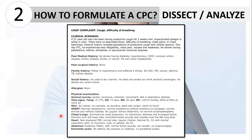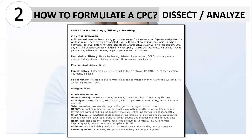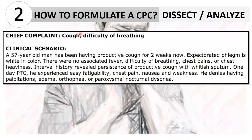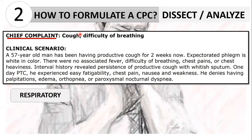For this, we would be using a model case, which is a patient who came from the outpatient department with a chief complaint of cough and difficulty of breathing. In dissecting a case, we underline in red the important points to consider and then analyze it. We start with the chief complaint. From there, we could already infer that the most likely cause of concern of the patient is respiratory involvement from the cough and difficulty of breathing. And out of all the body systems, it is the respiratory system that we are considering the most.